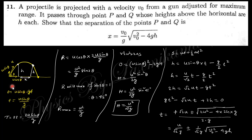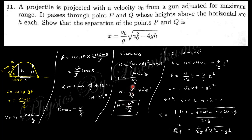The time of flight will be 2u·sinθ/g and the range will be u²·sin2θ/g. This range is maximum when sin2θ is maximum, that is when 2θ = 90°, meaning θ = 45°. The maximum range is u²/g. From this relation you get the height as u²·sin²θ/2g, and since θ = 45°, you get u²/4g as the height at maximum range.